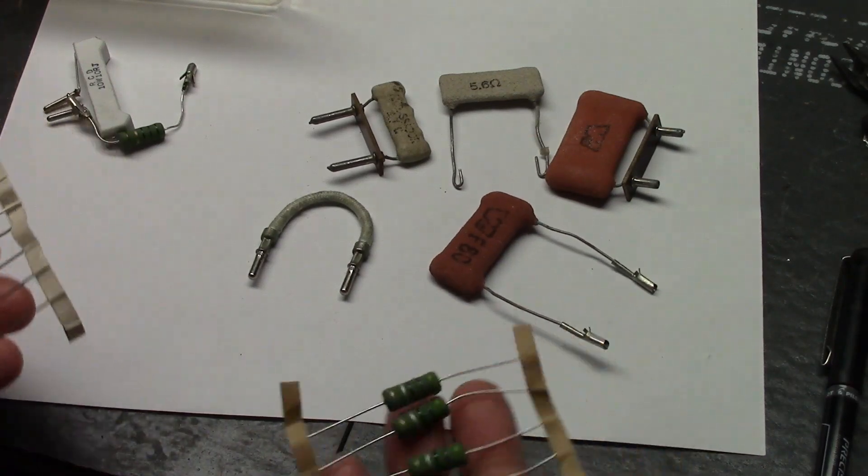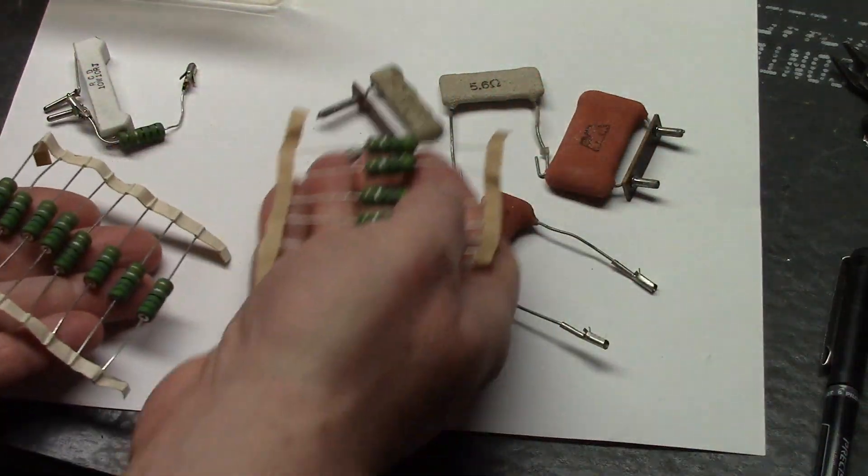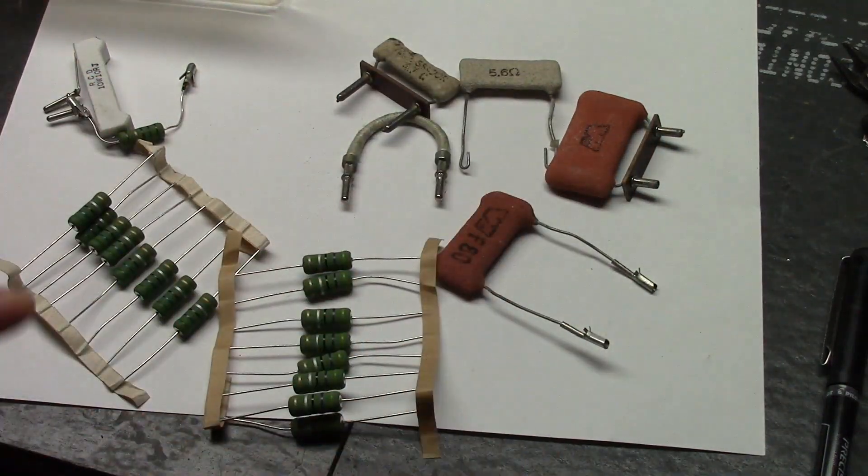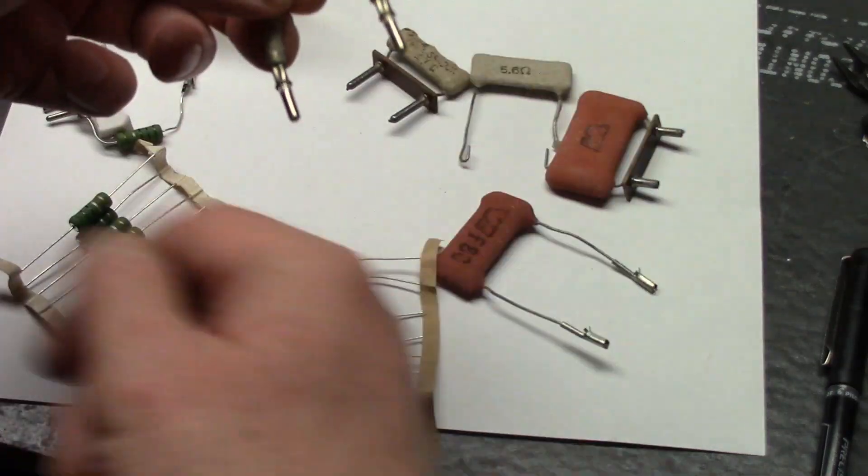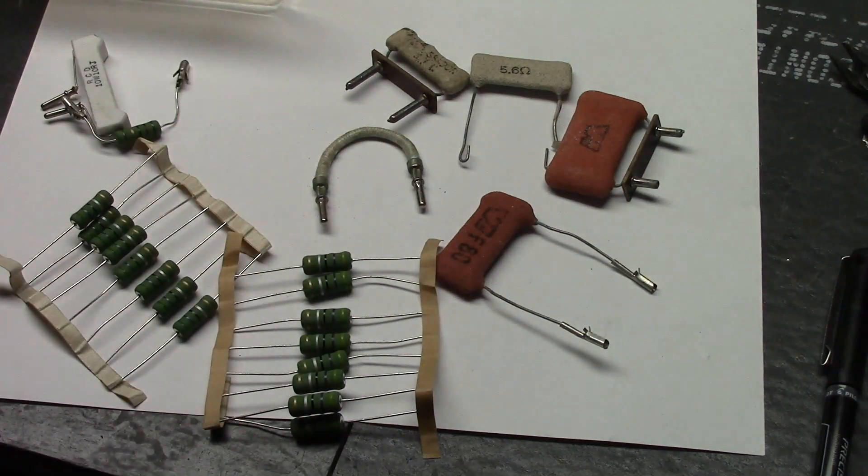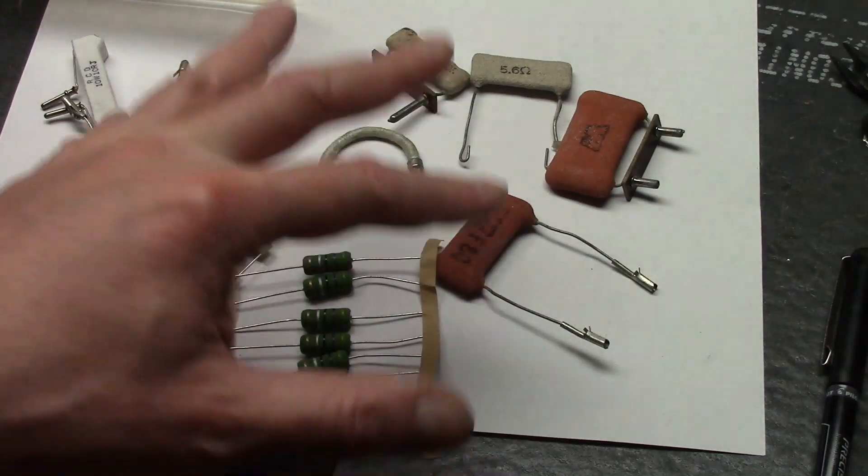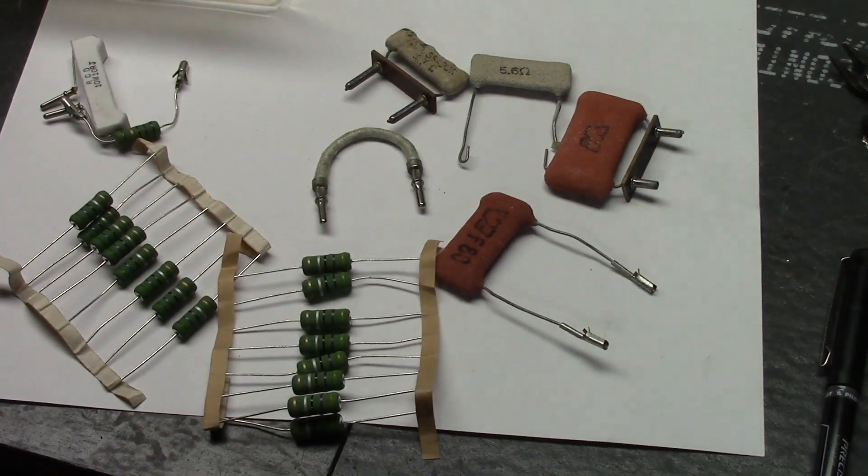Don't do what I see sometimes in these old sets when these have burned out and they just wrap some heavy gauge wire around it. These are there to both protect the set, to protect you, replace them with something equivalent. Thank you.